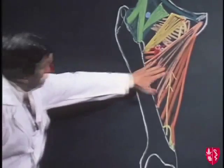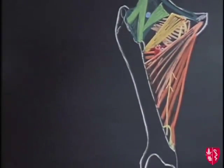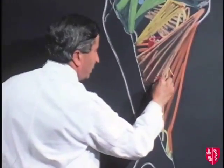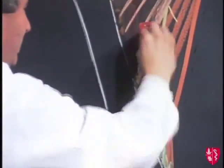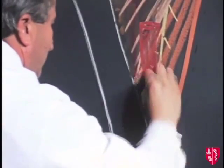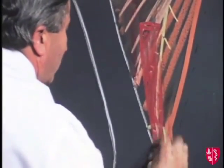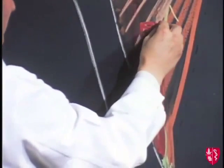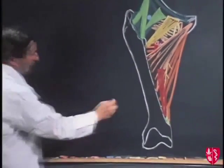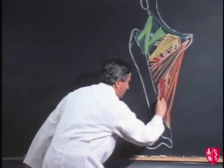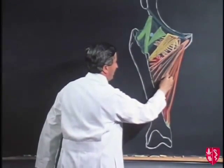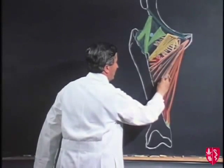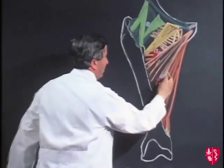Sitting on the anterior surface of the adductor longus is the femoral artery, passing down and disappearing through the hiatus in the adductor magnus, where it becomes the popliteal artery behind the knee joint. Accompanying it, the femoral vein — a continuation of the popliteal vein — first lies lateral to the artery, then posteriorly, and then comes to lie on the medial side of the femoral artery.